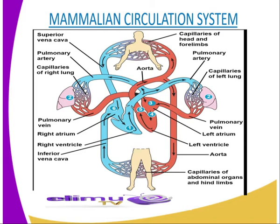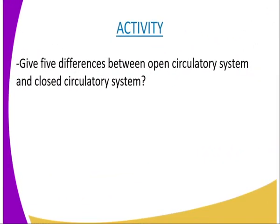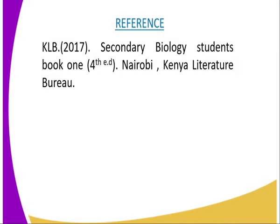Those are some of the differences between the open circulatory system and the closed circulatory system. Also, in the open circulatory system, haemolymph — which is the transporting fluid — is in direct contact with the body tissues; hence, cells exchange materials directly with the fluid. While for the closed circulatory system, there is no direct contact between the blood and the tissues; the exchange of materials occurs through the tissue fluid. Having said that, we can have the following activity whereby you are required to give five differences between the open circulatory system and a closed circulatory system.